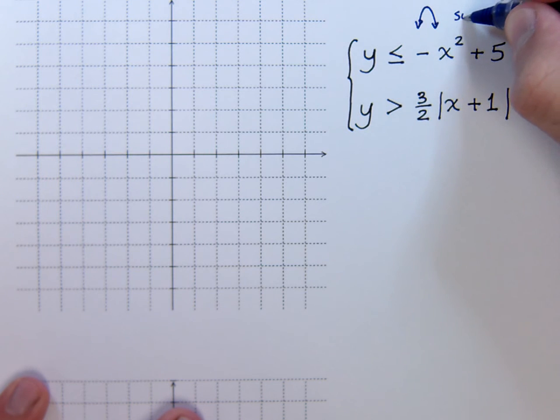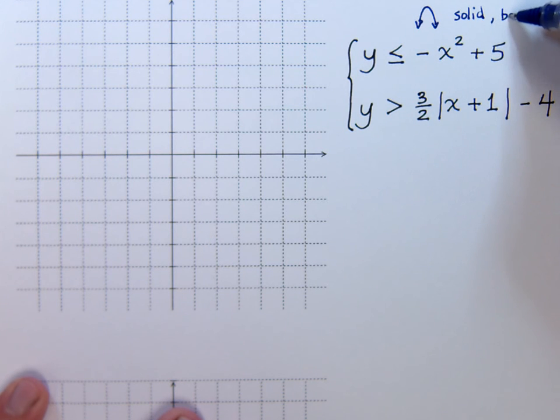Since it's equal to, I know that it will be solid. Less than tells me I'm going to be shading below. The plus 5 means I'm going to be going up 5.